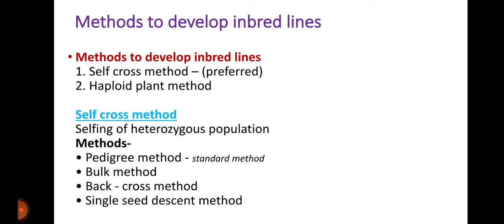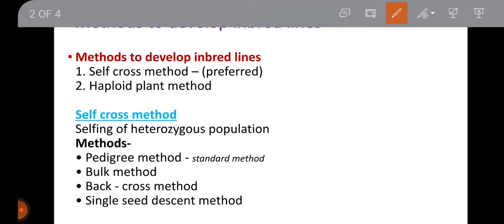There are two methods to develop inbred lines: the self-cross method and the haploid plant method. However, the self-cross method is generally preferred.